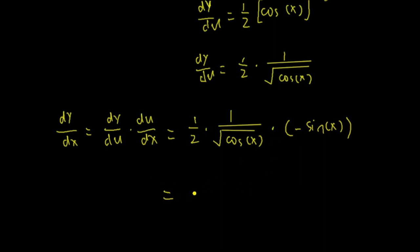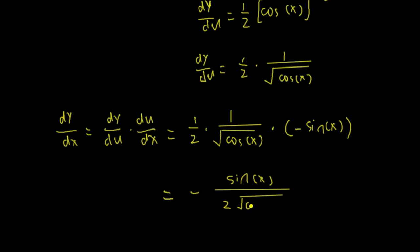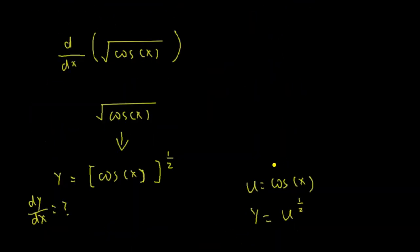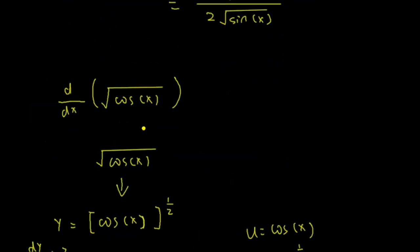Grouping that together, putting the negative sine to the front: it's negative sine x on top, divided by 2 times square root of cos. So that's the derivative of square root of cos.